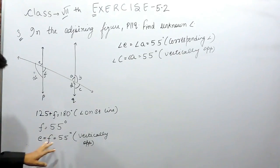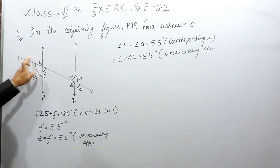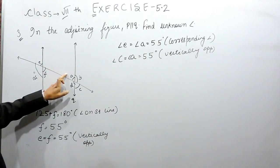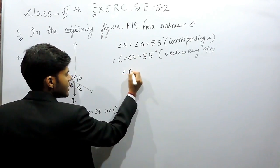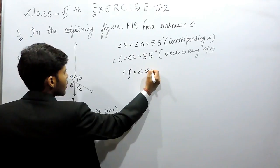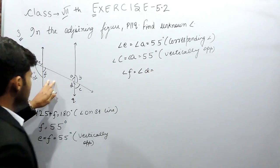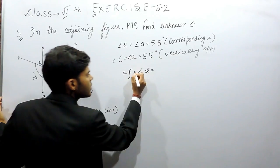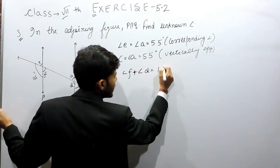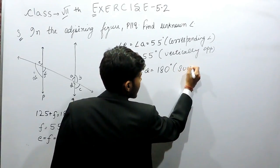Now, we know angle E, we know angle F, we know angle A, we know angle C. We have to only find angle D and angle B. Now, angle F plus angle D is equal to 180 degrees, sum of interior angles.